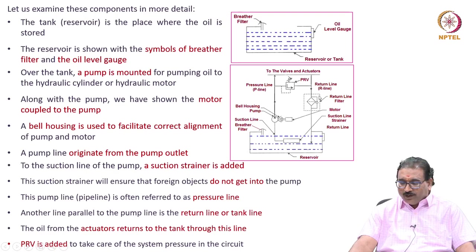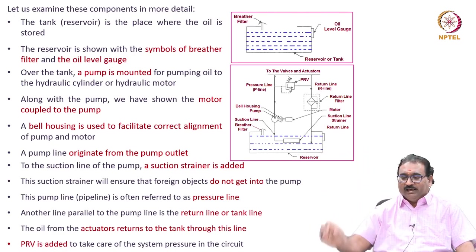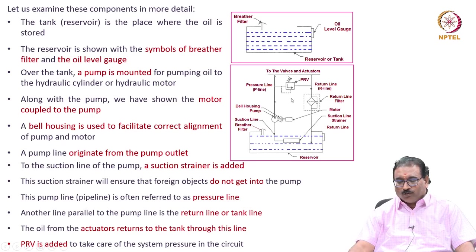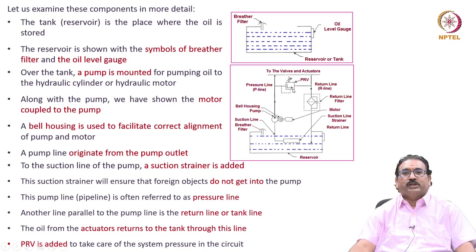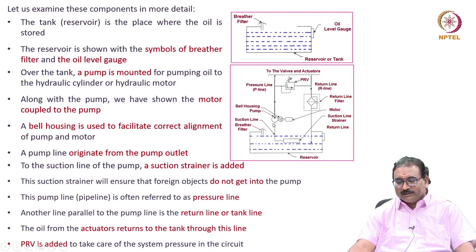Here you will see the PRB — pressure relief valve — to monitor the total system pressure. If the pressure exceeds, it diverts the flow to the tank. Otherwise, it is always a closed type. It will monitor the pump line, pressure line, always. If it exceeds, it will open, then flow will divert back to the tank.